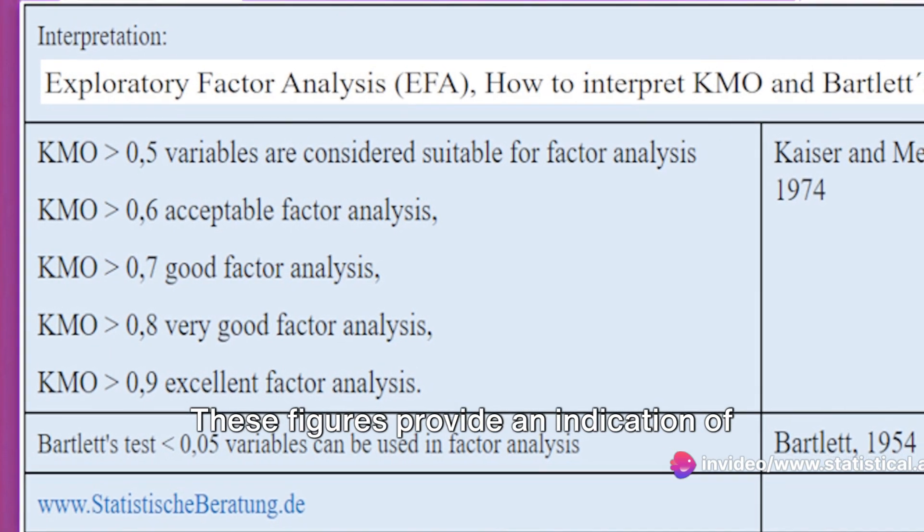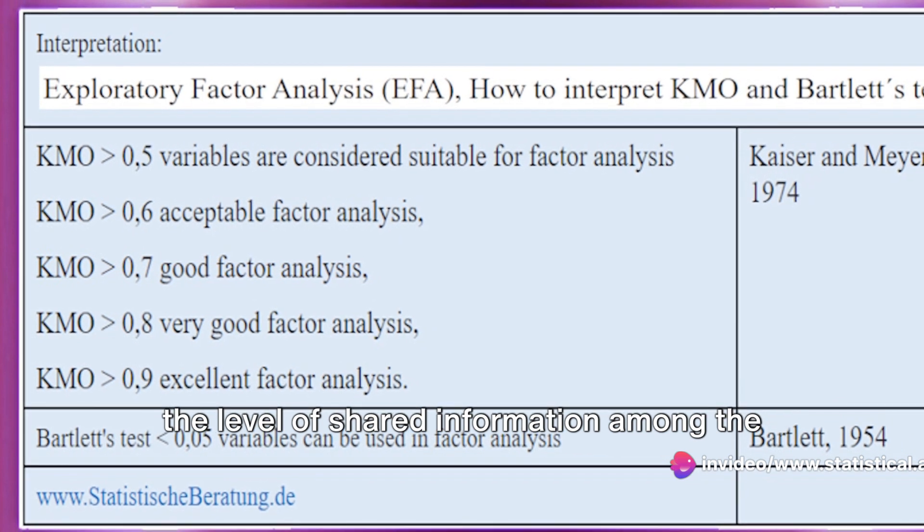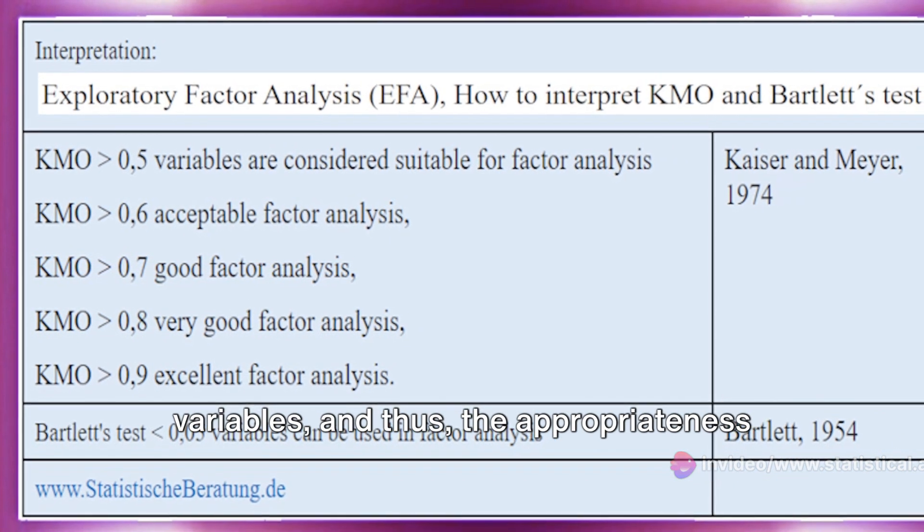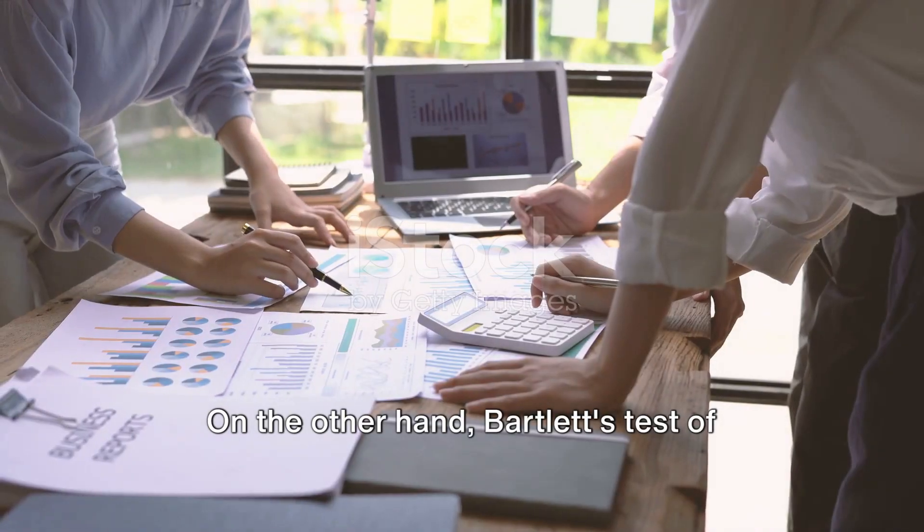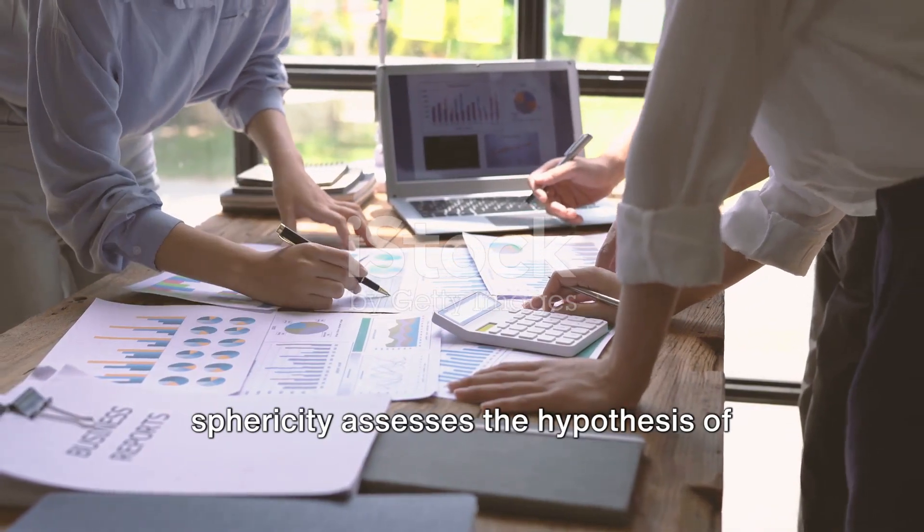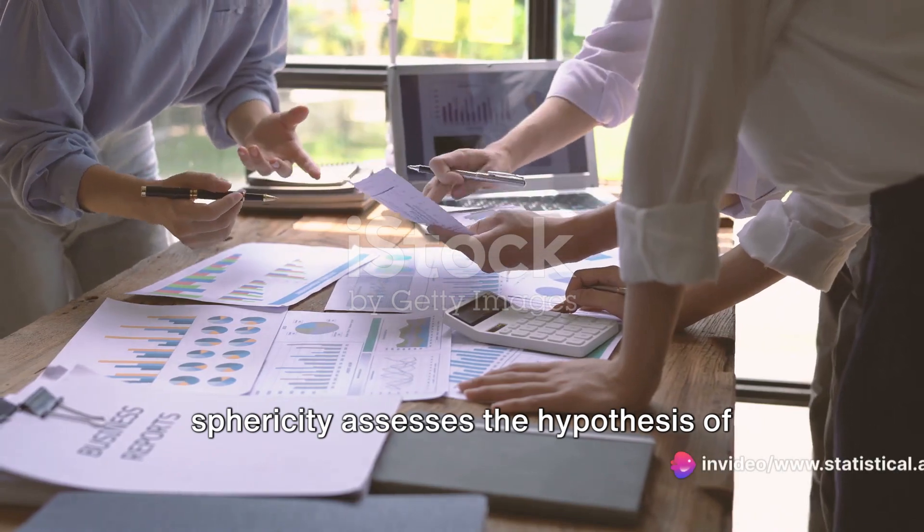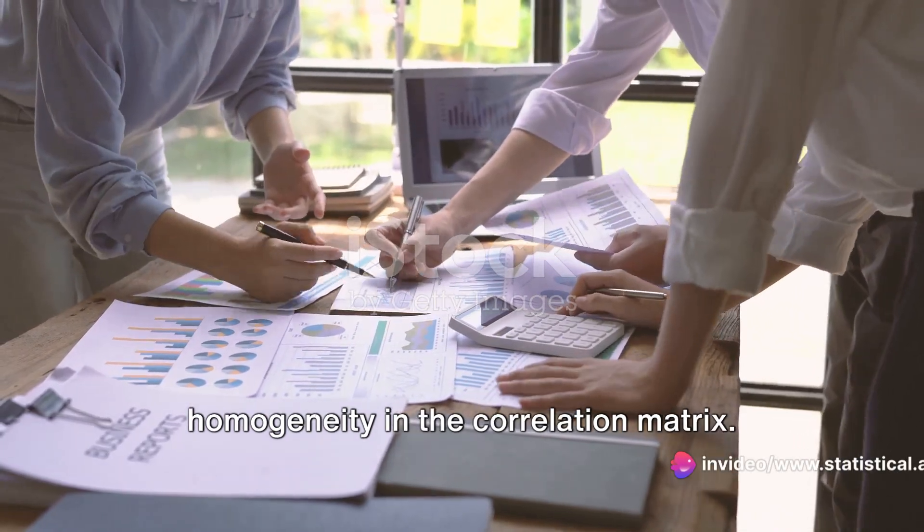These figures provide an indication of the level of shared information among the variables and thus the appropriateness of the factor analysis. On the other hand, Bartlett's test of sphericity assesses the hypothesis of homogeneity in the correlation matrix.